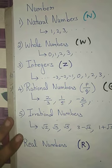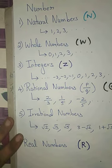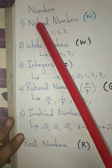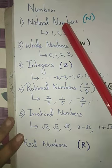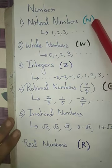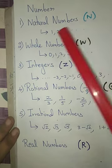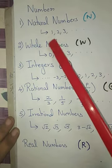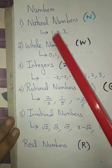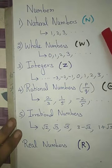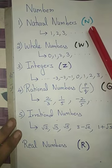We are going to see different types of numbers. First we are going to see natural numbers, which we have already learned in primary classes. Natural numbers start with 1, so natural numbers are 1, 2, 3 and so on, and it is denoted by capital N.